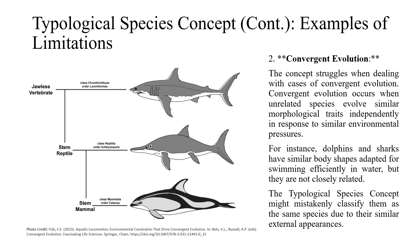Another limitation is very apparent in the case of convergent evolution. The concept struggles when dealing with convergent evolution — which occurs when unrelated species evolve similar morphological traits in response to similar environmental pressures. For instance, dolphins and sharks have similar body shapes adapted for swimming efficiently in water, but they are not closely related. The typological species concept might mistakenly classify them as the same species due to their similar external appearances.